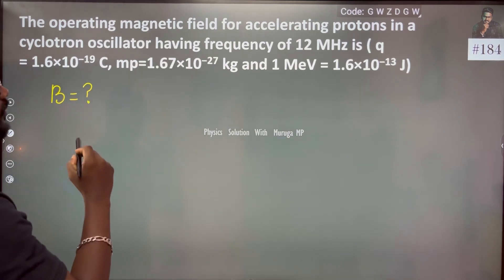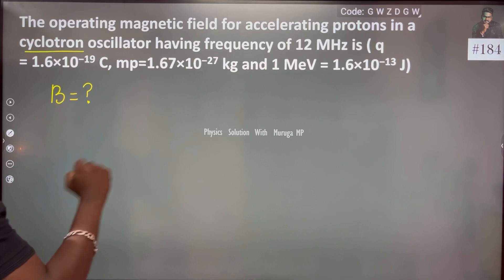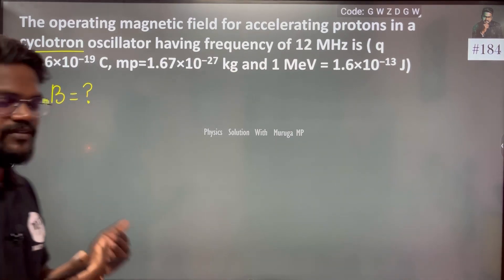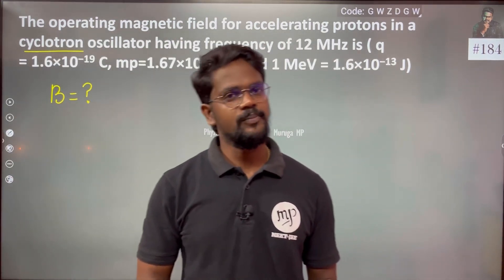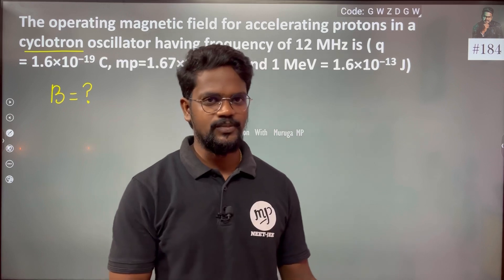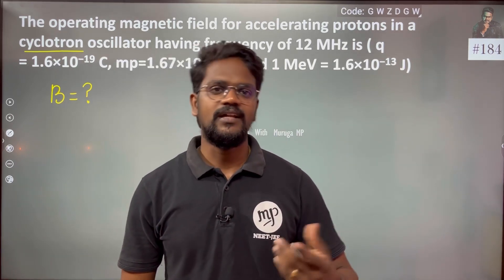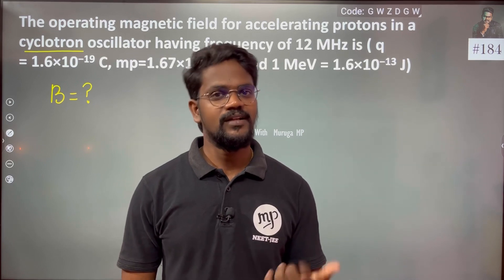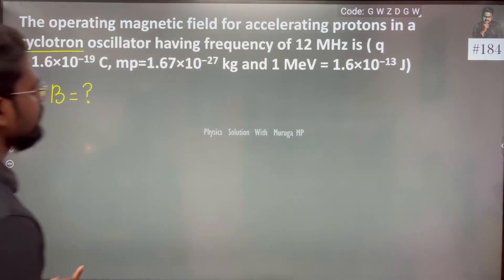In a cyclotron, we have both a magnetic field and an electric field that are perpendicular to each other. The electric field accelerates the charged particle, and the magnetic field causes a directional change.